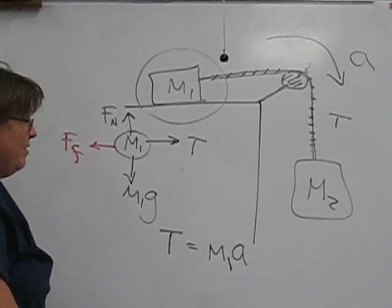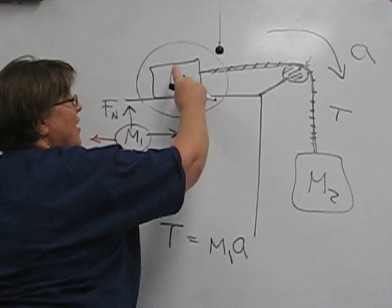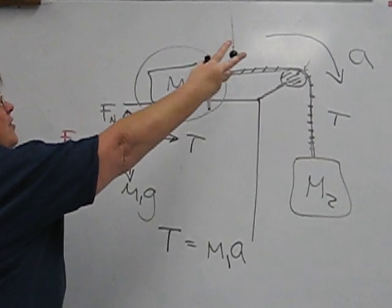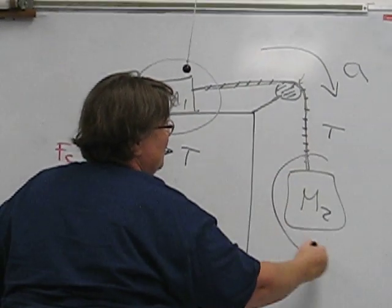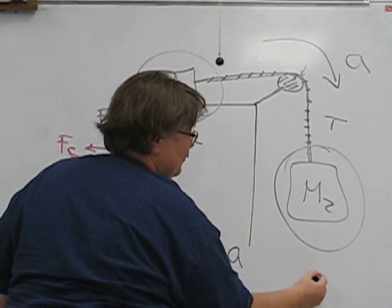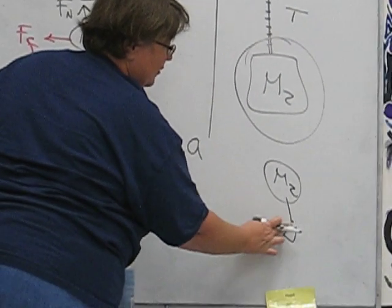Now, the fact that this string doesn't stretch means M1 and M2 are also moving with the same rate of acceleration. And what happens with M2 is you've got, for a free body diagram, the weight of M2.